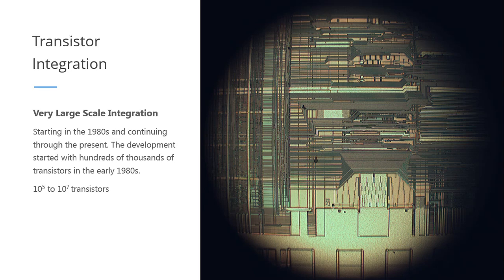From the 1980s up to the early 2000s, they were able to fit around 100,000 to about 100 million transistors into a single package — very large-scale integration or VLSI. With this development, computers became more powerful and cheaper to produce, making it viable for the general public to own computers, unlike before when computers were mainly used for education, research, business, government, and military applications.